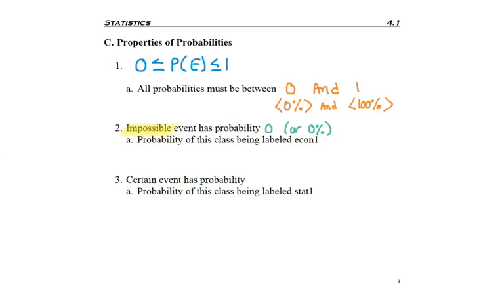So that leaves us with the probability of a certain event. And the certain event has probability 1 or 100%. That means it's definitely going to happen. This class will always be labeled STAT 1.